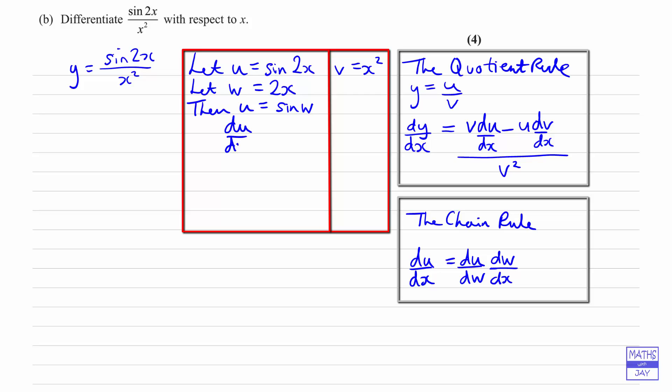So du by dw, well now we're just differentiating sine of a function, and that's going to be cosine of the same function. So that's going to be cos w.